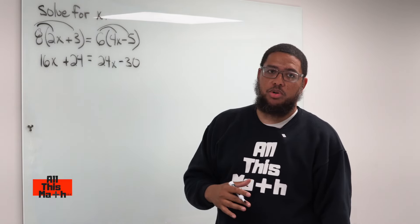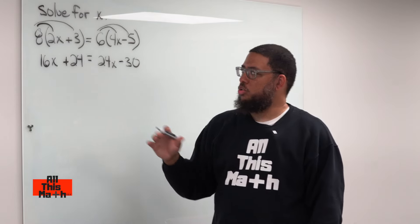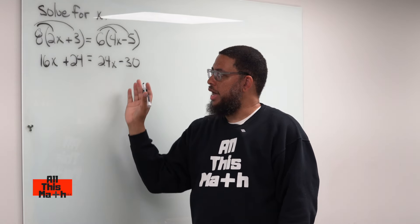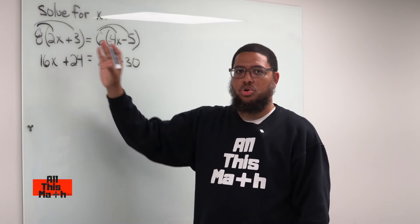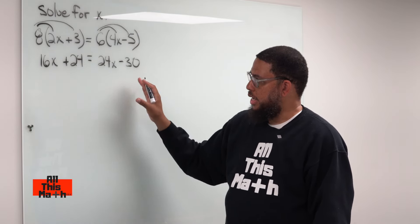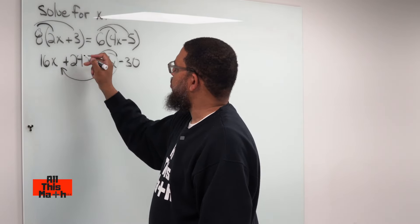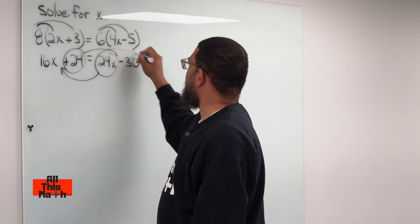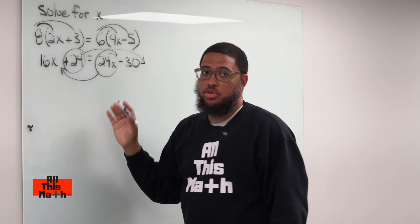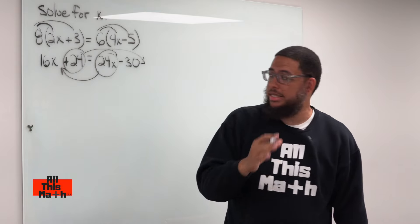Now, I'm going to transpose. When we transpose, we move terms around in order to have all the x's on one side and all the constants on another side. So I'm going to move this 24x over to the left-hand side. I'm going to move this 24 over to the right side. Now, when we transpose, we must remember to change the signs.